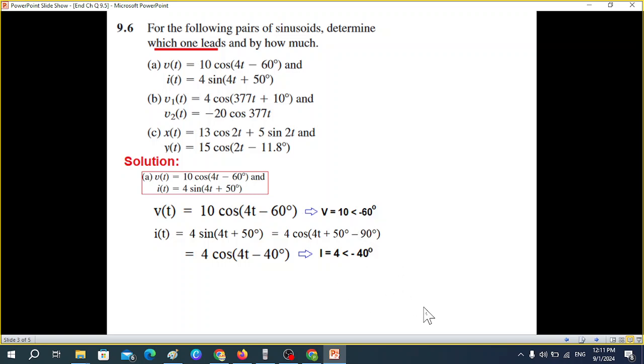So it is I = 4∠-40°. And now we can easily plot these into phasor form. So you can see this minus 60, so we have plot from zero going toward the negative side minus 60. And the other one is minus 40.